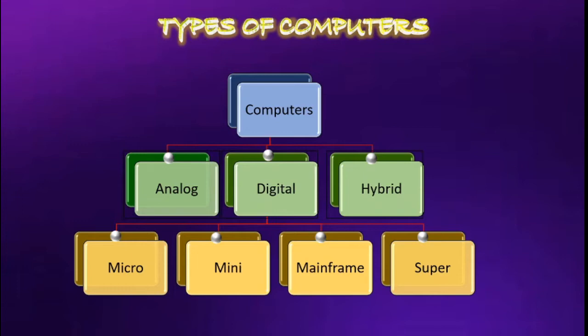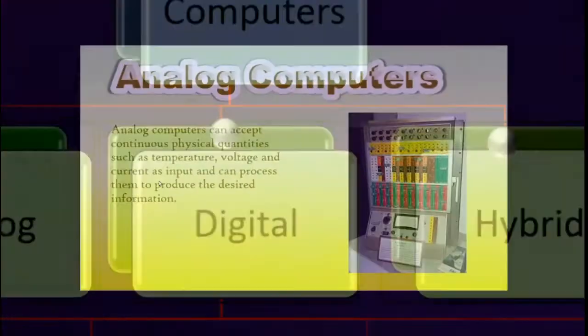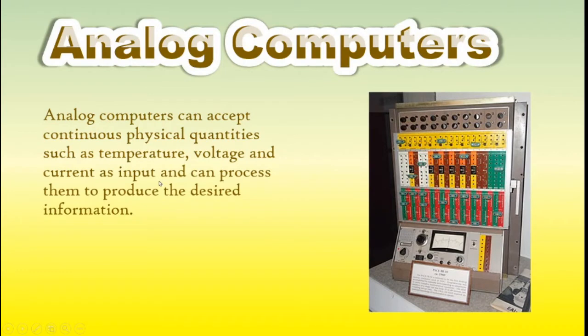Now let's learn about Analog Computers. Analog computers are used to process analog data. Analog data is of continuous nature which is not discrete or separate. Such type of data includes temperature, pressure, speed, weight, voltage, depth, etc.